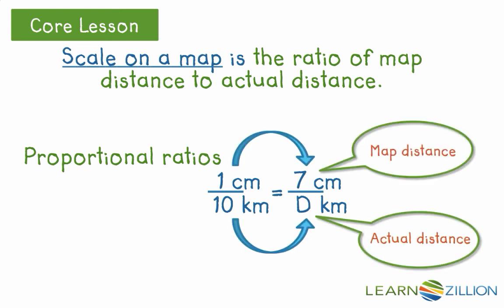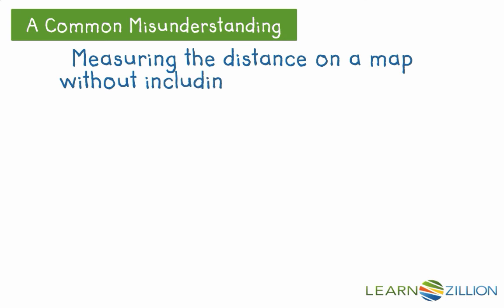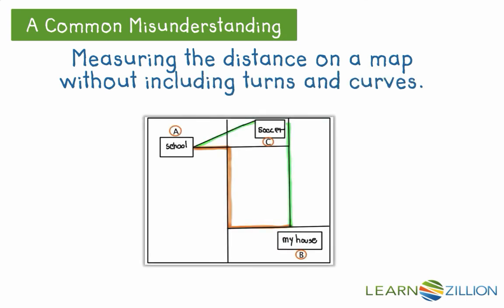Comparing map distance to actual distance. A common misunderstanding is measuring the distance on a map from point A to point B without including turns and curves. This would be incorrect as you can see by the red line. Measuring a straight line would not be the actual distance from point A to point B which follows the roads including turns and curves.